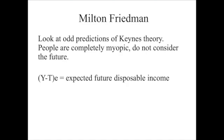Friedman noticed that it would make more sense if people were thinking about their income in the future. As a student, you might expect to have a lot more income in the future when you get a job, and you might want to consume some of that today — take out a student loan, consume some today, and then pay back that loan in the future. You may observe a lot of this in practice.